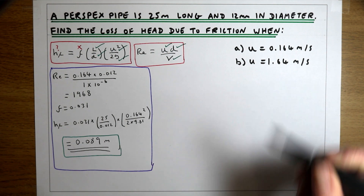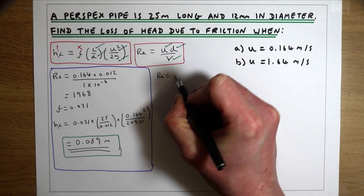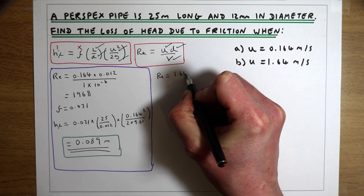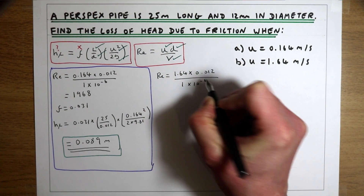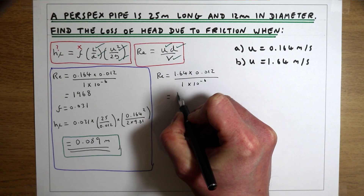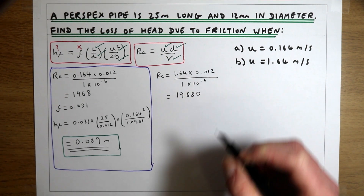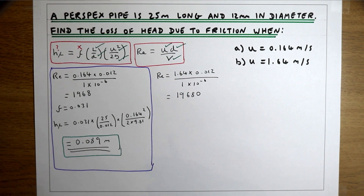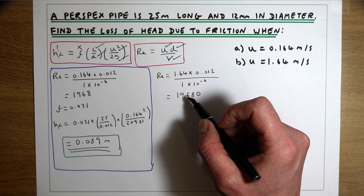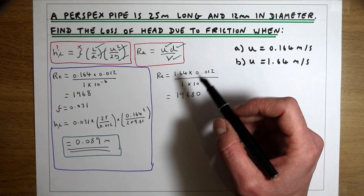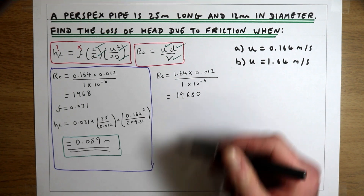For the second part, the velocity is 10 times larger. Reynolds number is now 1.64 × 0.012 / 1×10⁻⁶, which gives us 19,680. Since this is above 4,000, this flow is going to be turbulent. We can plot that on our Moody diagram to find F for this second part of the example.